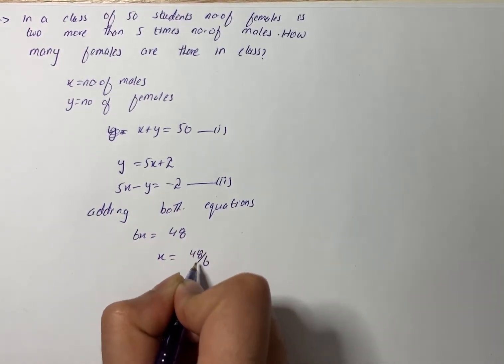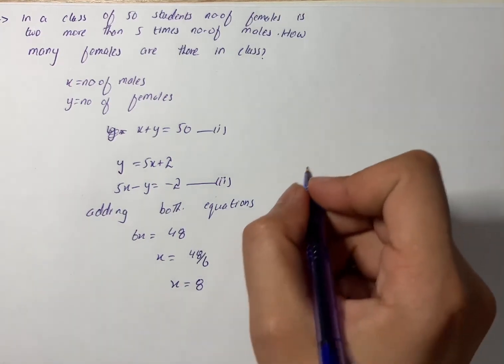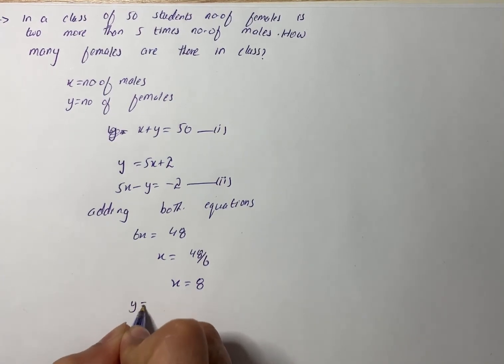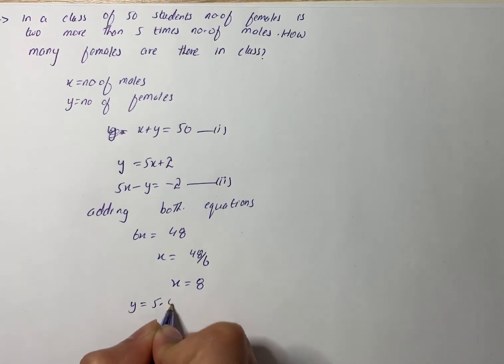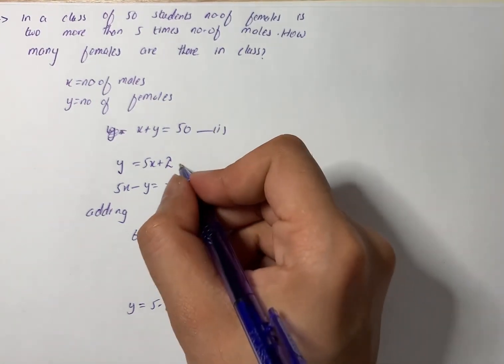Hence, the number of females can be found using the equation: y equals 5 times x plus 2. Substituting x equals 8, we get y equals 5 times 8 plus 2.